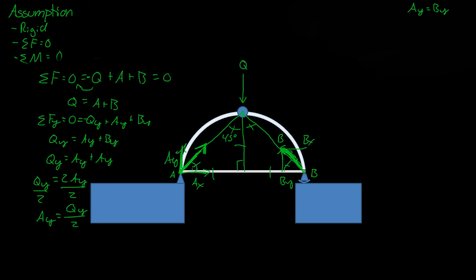So if this is a 45 degree angle, that means this is a 45 degree angle. So that means AY is equal to AX, and BY is equal to BX.